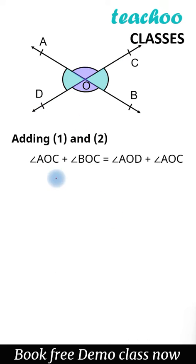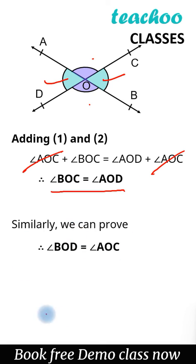So upon equating we get this. So angle AOC and angle AOC gets cancelled since it is on both sides and we are left with angle BOC is equal to angle AOD. So we have proved that this angle is equal to this angle. Similarly we can prove for this and this also. So hence we have proved that vertically opposite angles are equal.